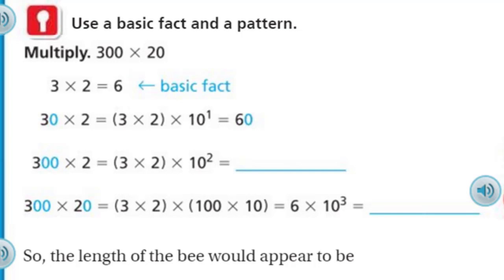The actual length of a queen bumblebee is about 20 millimeters. Even though they seem small, 20 millimeters, when they come around, they're looking pretty big, aren't they? The photograph shows part of a bee under a microscope at 10 times its actual size. Wow, it's like a big magnifying glass. What would the length of the bee appear to be at a magnification of 300 times its actual size? It says use a basic fact and a pattern. Multiply 300 times 20.